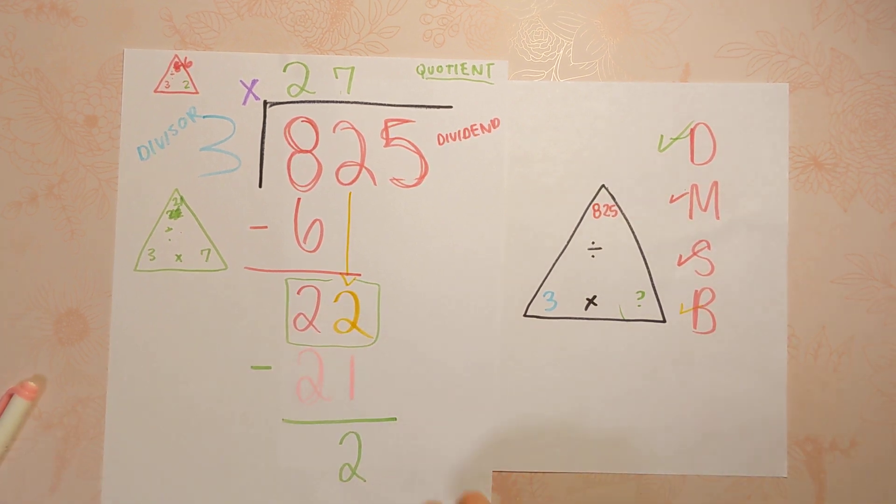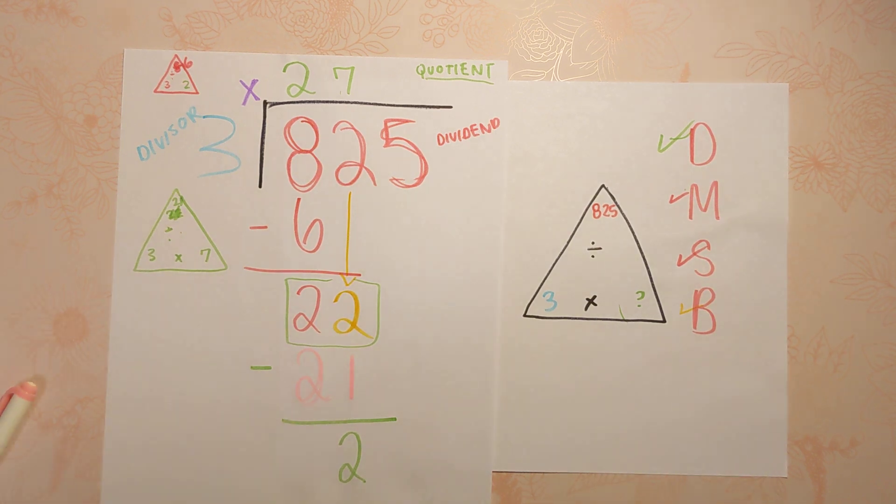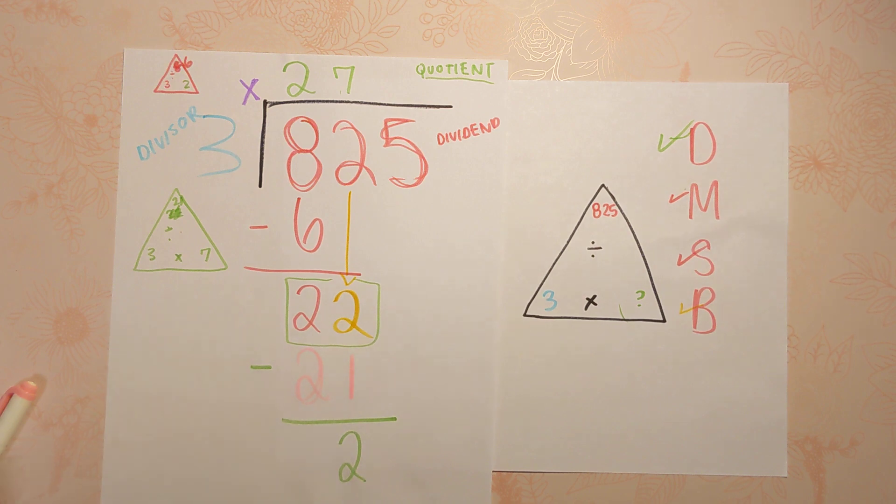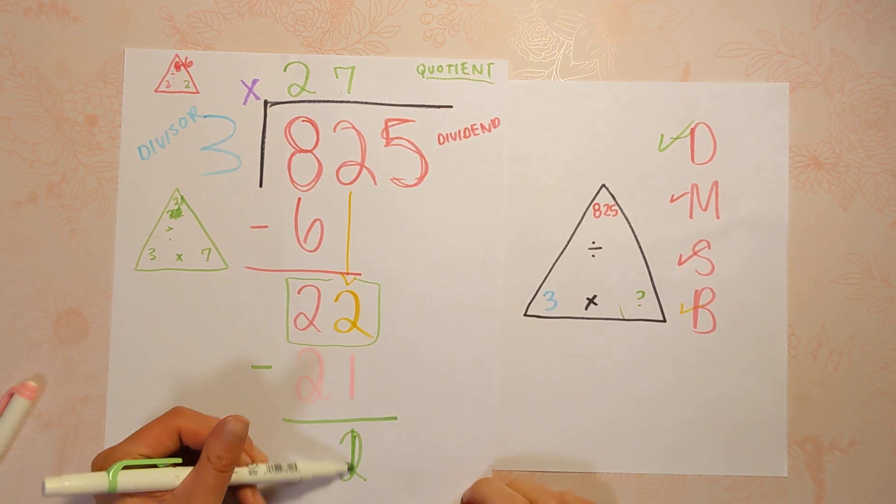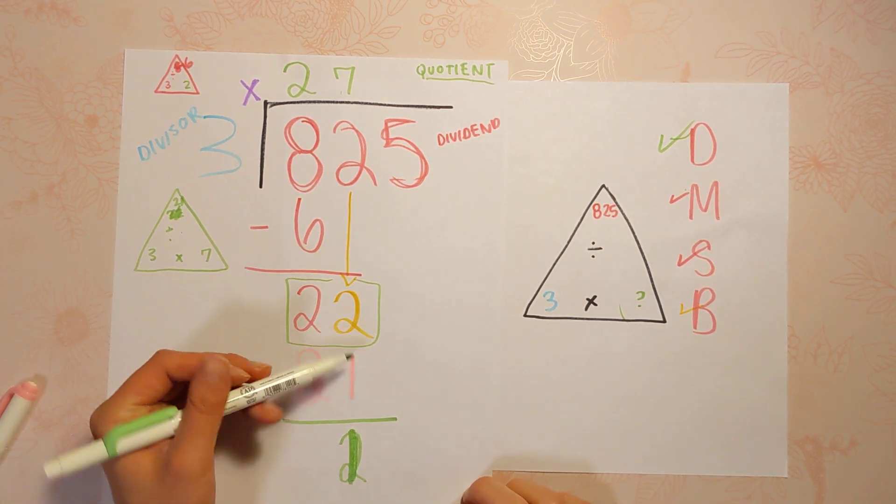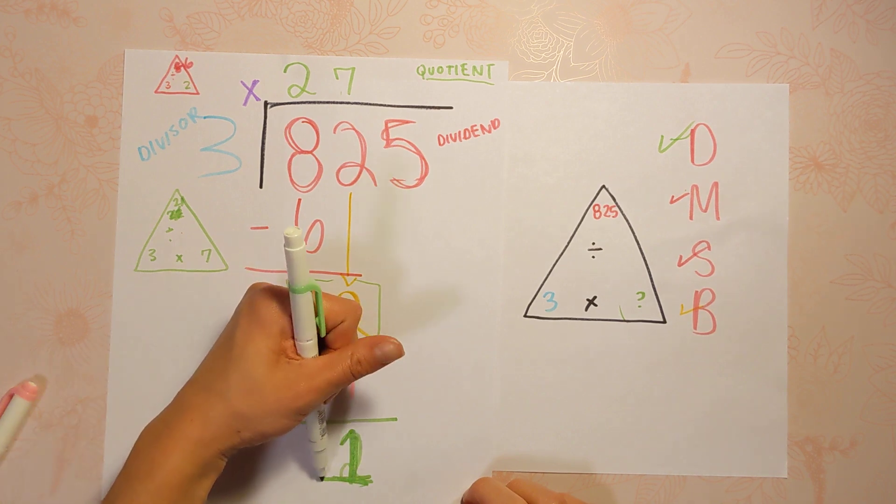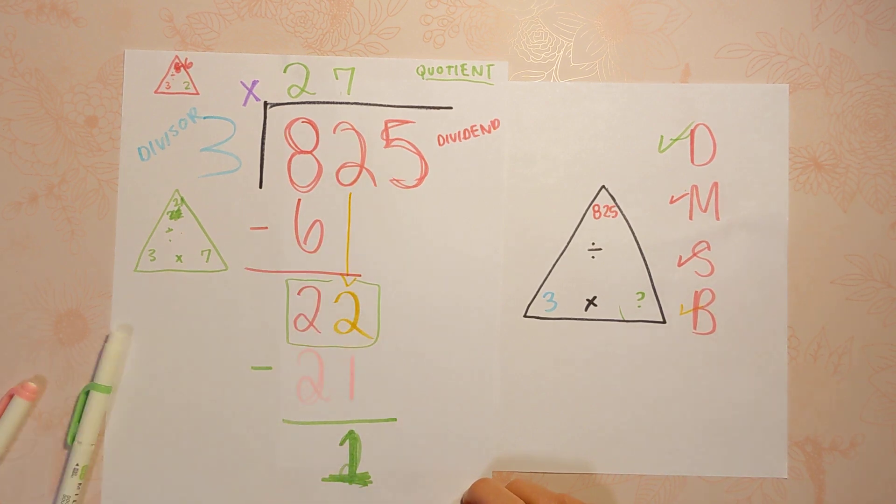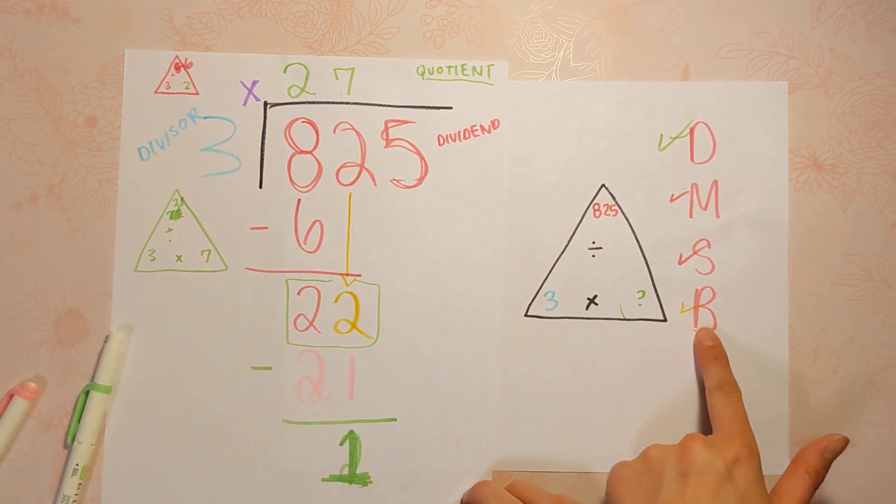What's our next step? Look over here. Our next step is bring down. Oh, I'm sorry. I did this wrong. My apologies. That is a 1. 22 minus 21 is 1. There we go. All right. Our next step is to bring down.